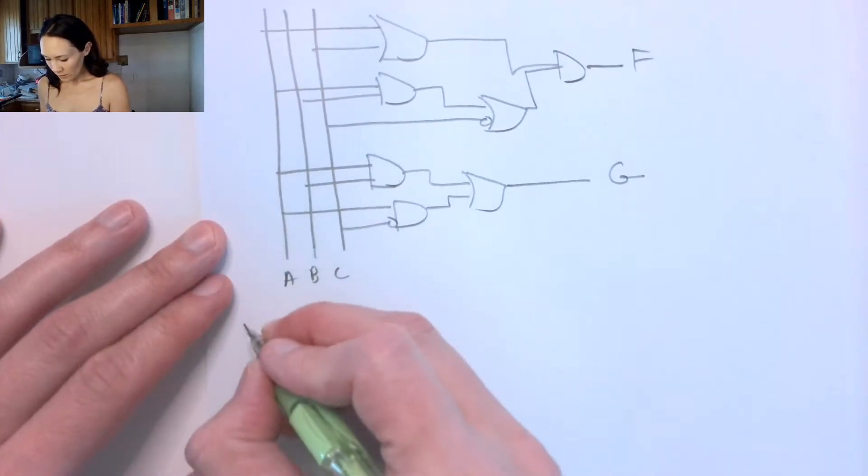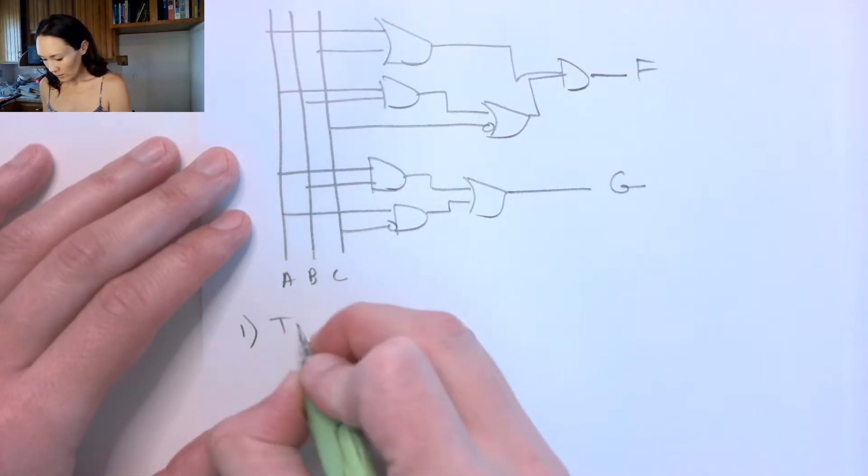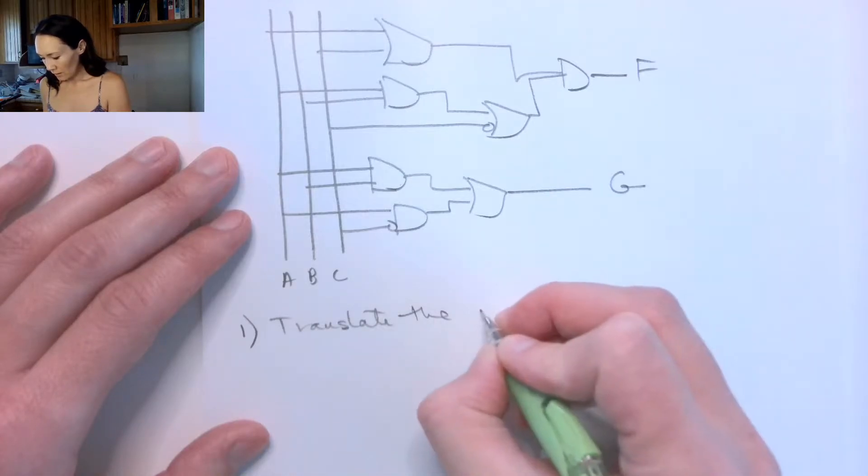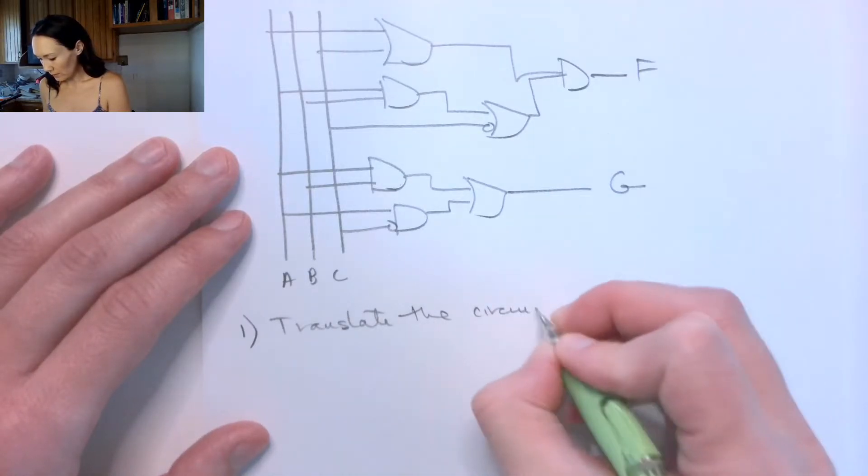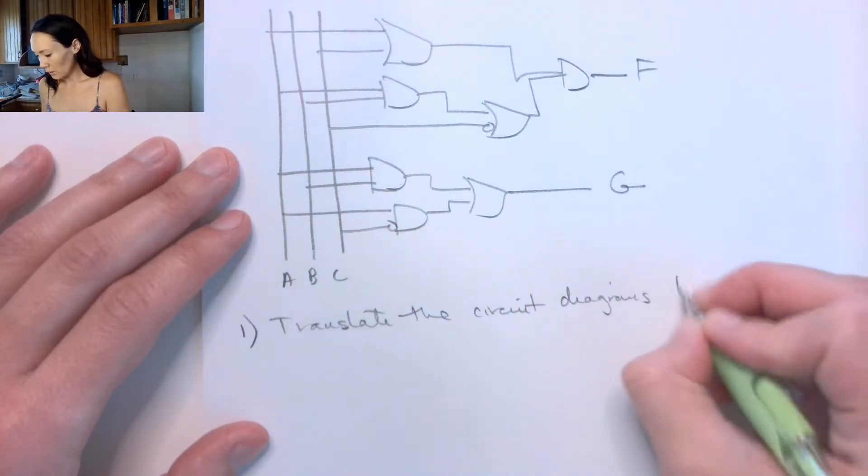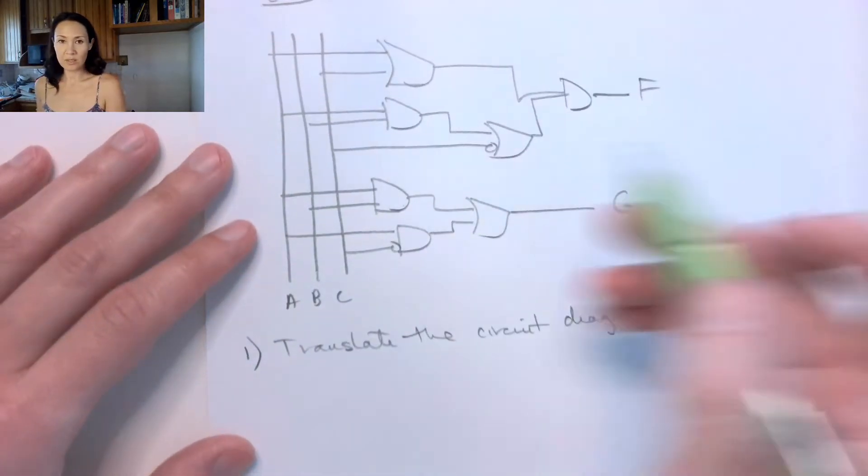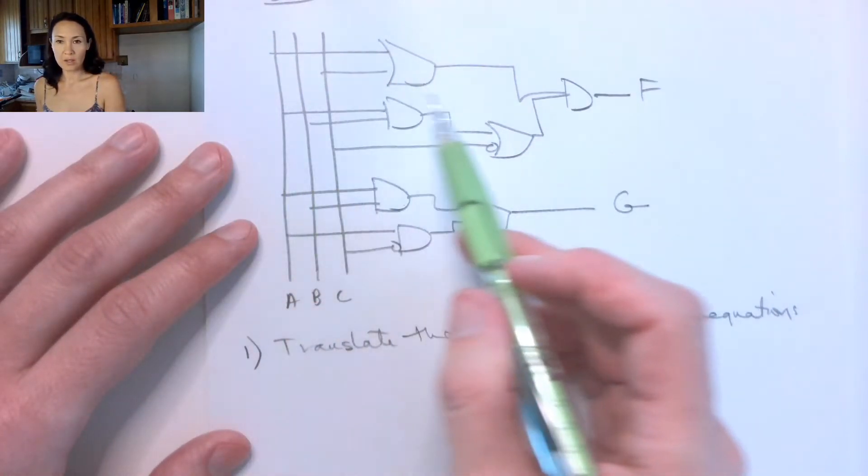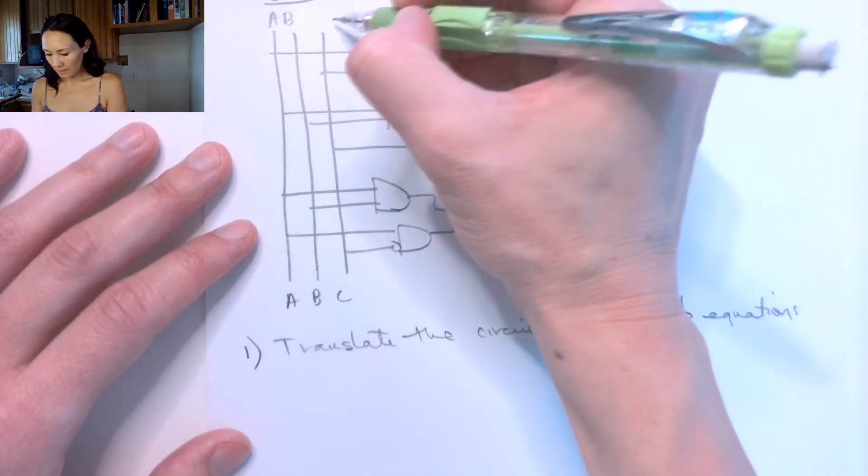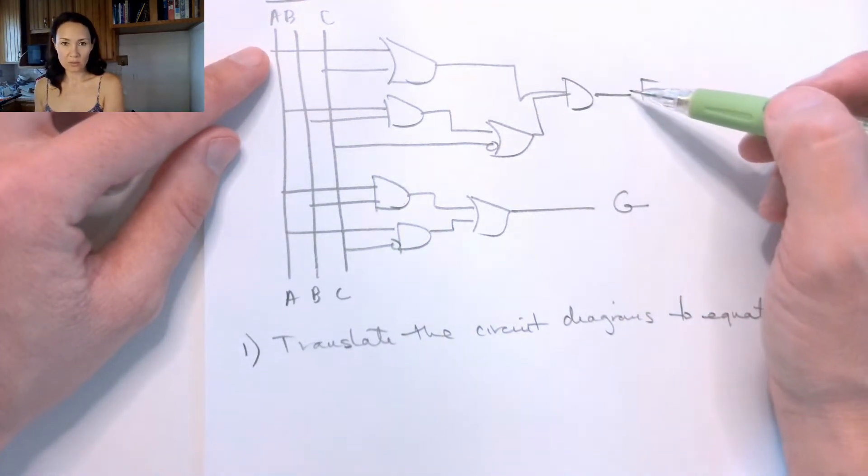So the first thing we want to do, if we want to show that F and G are equal to each other, is we want to translate the circuit diagrams to equations. The way we do that is we're going to start from left and go to the right, and we're just going to systematically see what is happening to the inputs and what's happening to those results.